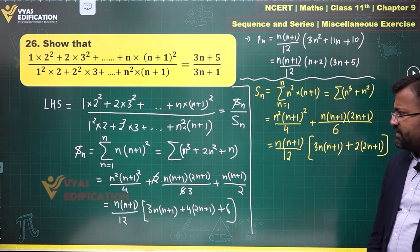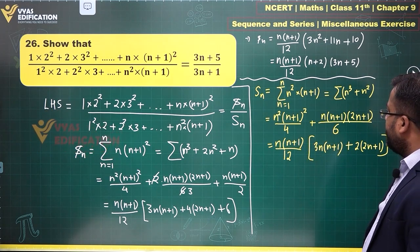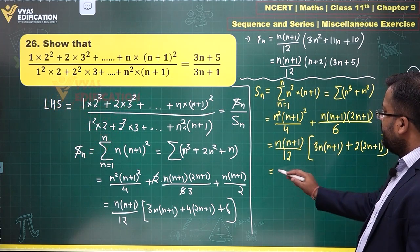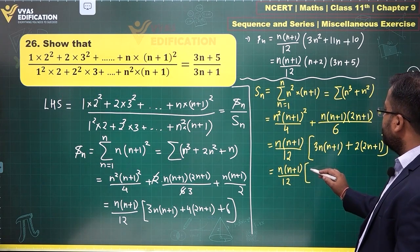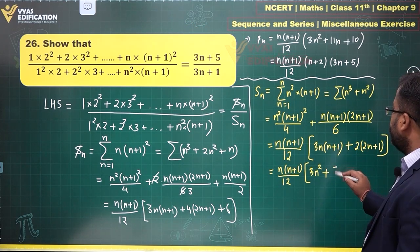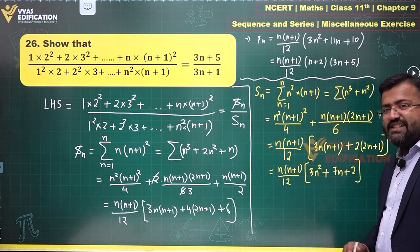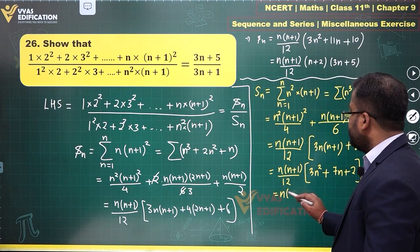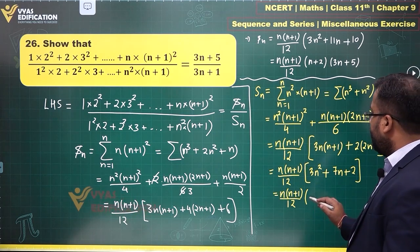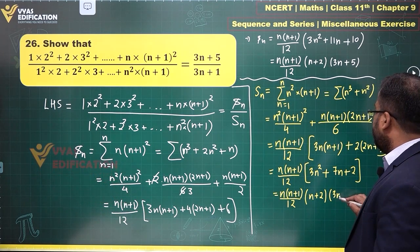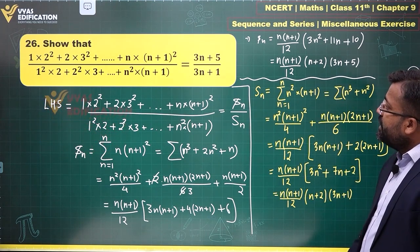So capital Sn equals n(n+1)/12 times the bracket. In the bracket we have 3n² + 3n + 4n + 2 = 3n² + 7n + 2. Writing 7n as 6n + n and factorizing: one factor is (n+2) and the other is (3n+1), since 3n² + 6n + n + 2 gives 7n and +2. So capital Sn = n(n+1)/12 · (n+2)(3n+1).